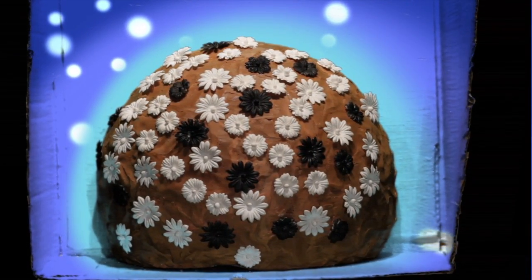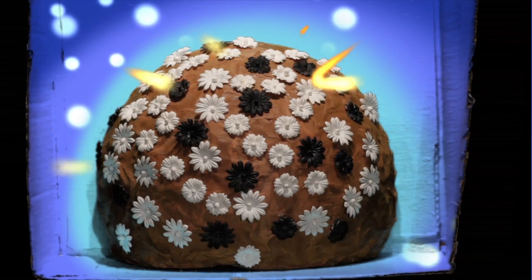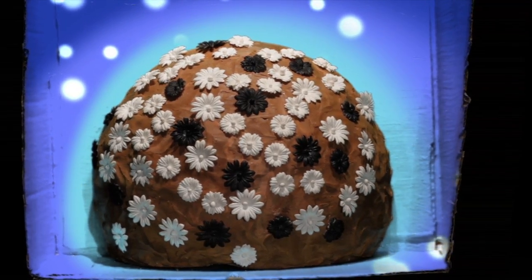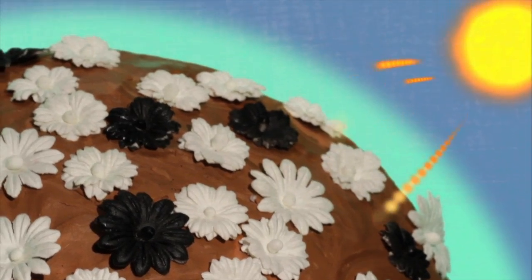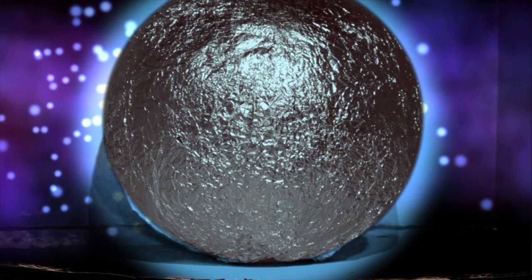We call this amount of reflectance albedo. The more reflective the surface of the planet, the higher its albedo. We can think of it as a percentage of how much energy is coming in and then bouncing back out into space.